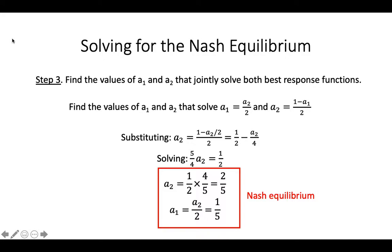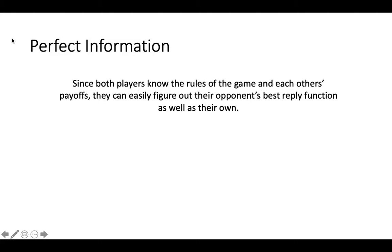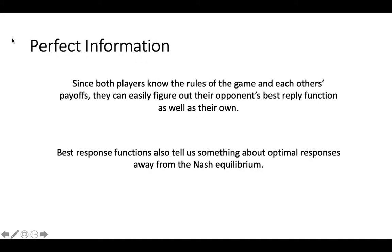This is the Nash equilibrium of this game. At this point, you may be asking: if these two players are playing simultaneously, how could they ever find the Nash equilibrium? If I am Player 1, I may know I should choose half of what Player 2 chooses, but how do I know what Player 2 will choose? One answer is that since this is a game of perfect information, not only do you know your own payoff function, you know Player 2's payoff function, and you can calculate Player 2's best reply function just as easily as Player 2 can. Thus, in principle, you can both figure out each other's solution to the game, as well as your own.